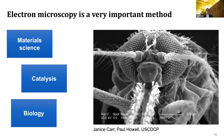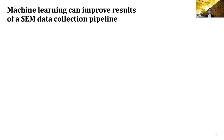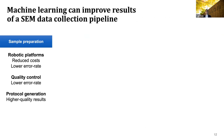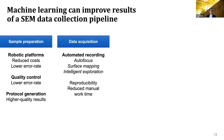We all know that electron microscopy is a very important method that can be used in material science, catalysis, and biology, giving us very nice pictures which are usually pretty easy to interpret. This work is about scanning electron microscopes. Machine learning can improve results of the electron microscopy data collection and processing pipeline. Usually we start with sample preparation, and you could imagine using robotic platforms to reduce costs, reduce error rate, some quality control systems, or even generate experimental protocols to get better results. Data acquisition includes automating and recording, with subproblems such as autofocus, surface mapping, and intelligent exploration of the surface.